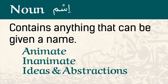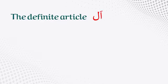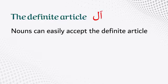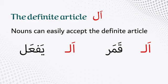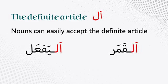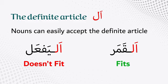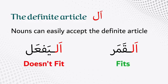One of the most important indicators for nouns is the definite article. Nouns can easily accept the definite article (al-), which is a two-letter prefix. So whenever you have a word you suspect is a noun, just add 'al' before it and see if it fits. If it does, then this word is a noun.